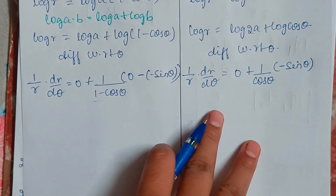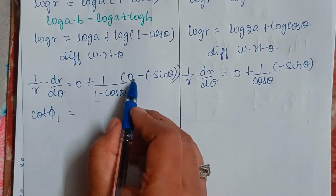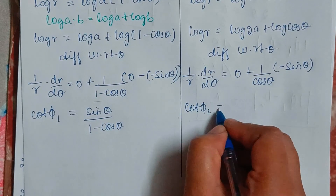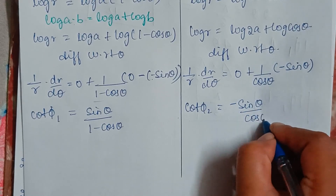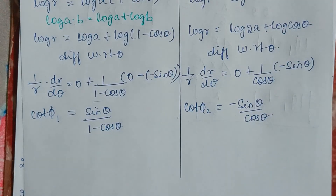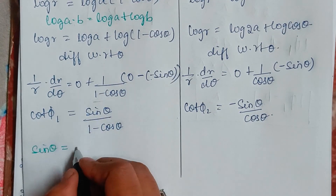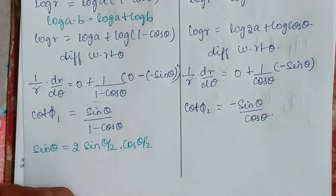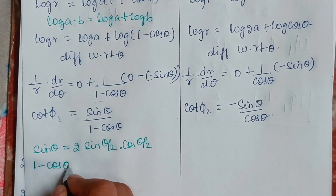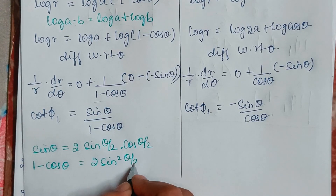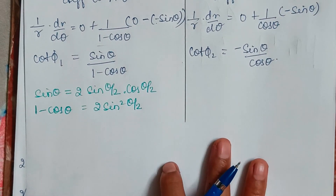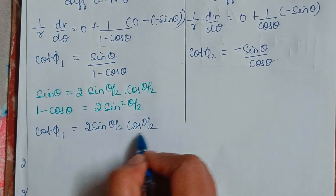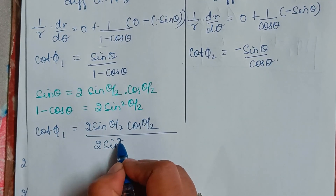Now I can write cot φ₁ equals minus times minus, which becomes plus sine theta divided by (1 minus cos theta). And cot φ₂ equals minus sine theta divided by cos theta. Now sin theta can be written as 2 sin(θ/2) cos(θ/2), and 1 minus cos theta can be written as 2 sin²(θ/2). So cot φ₁ equals 2 sin(θ/2) cos(θ/2) divided by 2 sin²(θ/2).